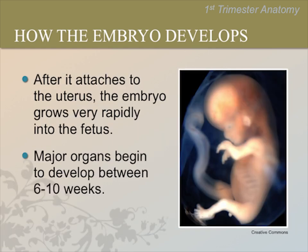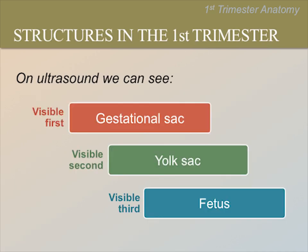Implantation of the fertilized egg into the uterine lining takes place at the end of the third gestational week. After the fertilized egg attaches to the uterus, it grows very rapidly into the fetus. Major organs begin to develop between 6 and 10 weeks. There are three structures that we can begin to see on ultrasound, one after the other, during the first trimester. We will discuss what each structure looks like.